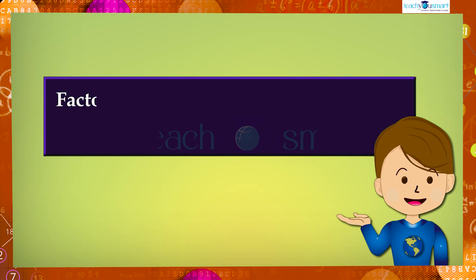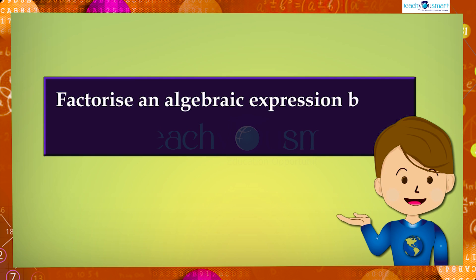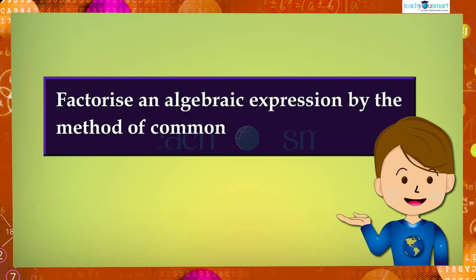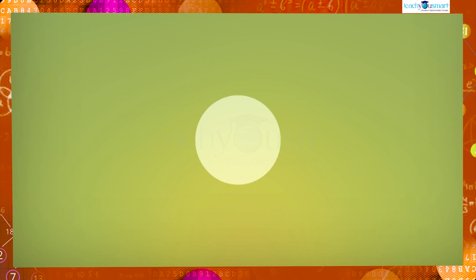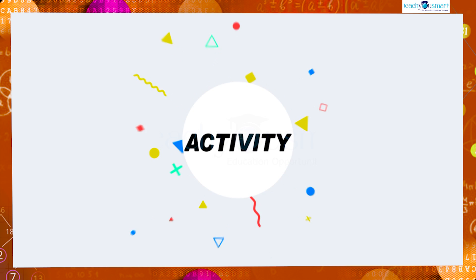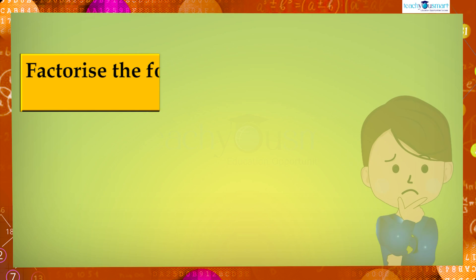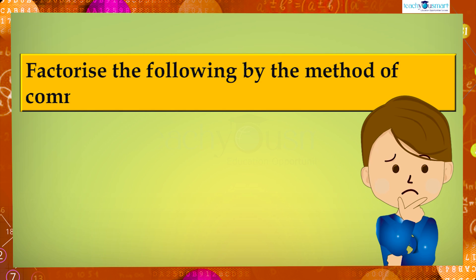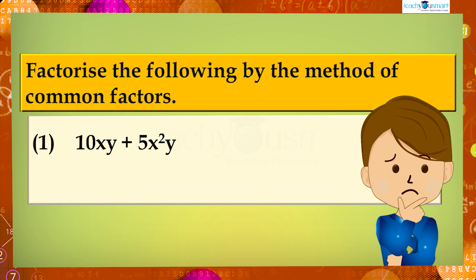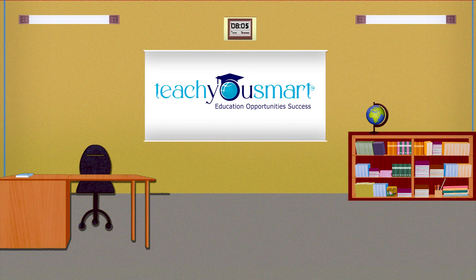Today we discussed how to factorize an algebraic expression by the method of common factors. Before winding up, let's check how much you understood by doing an activity. Factorize the following by the method of common factors: first, 10xy + 5x²y; and second, a²b + a²b². That's all for now — see you all in the next class.